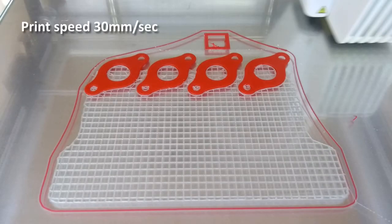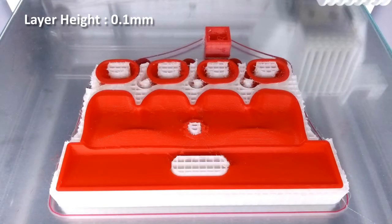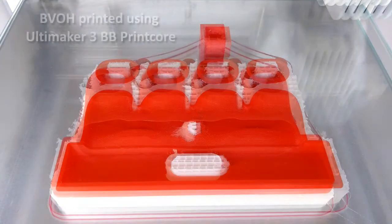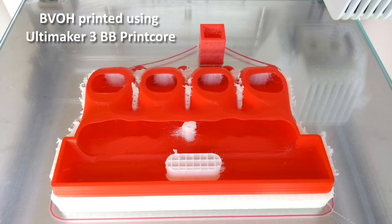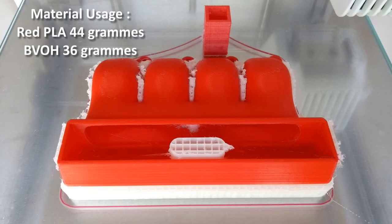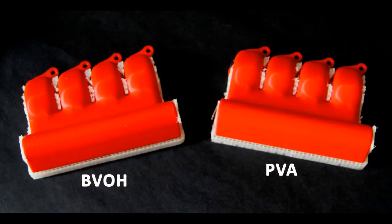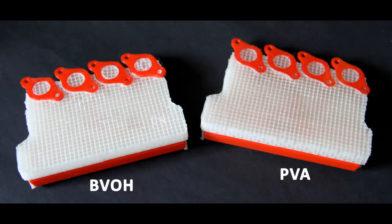You can now see the 3D printing process for that particular design using BVOH support material. Some of the smaller details there emerging and then the print going through to completion. There's a couple of minor stringing areas which may mean some fine tuning for some of the retraction settings may have been required. But overall, I got to a very, very satisfactory print with this. As indeed I did with PVA, you can see the two particular prints compared here. And they do both look very, very similar in terms of the quality of the print and of the support material.